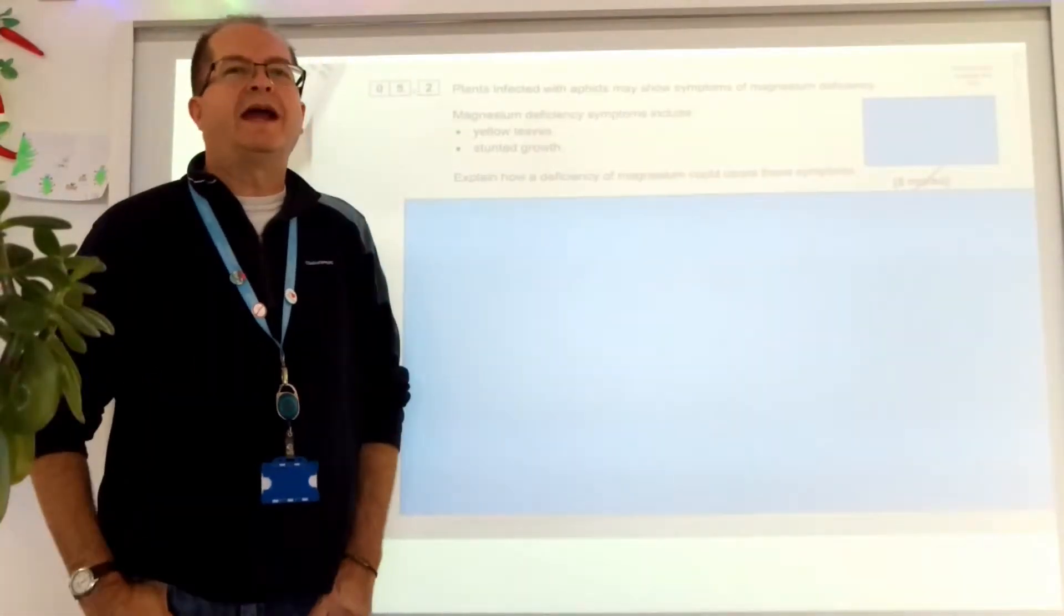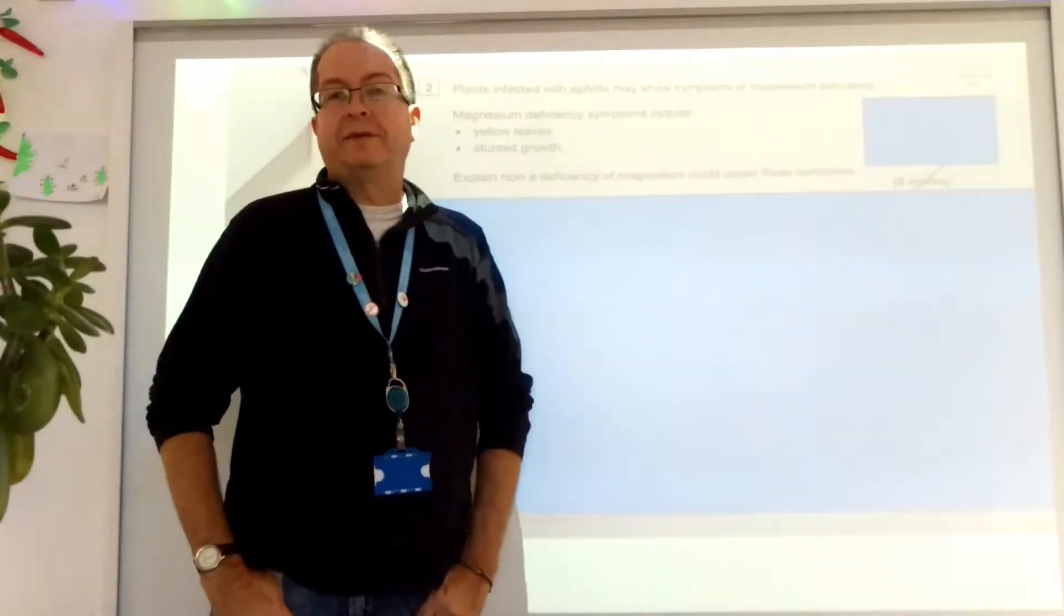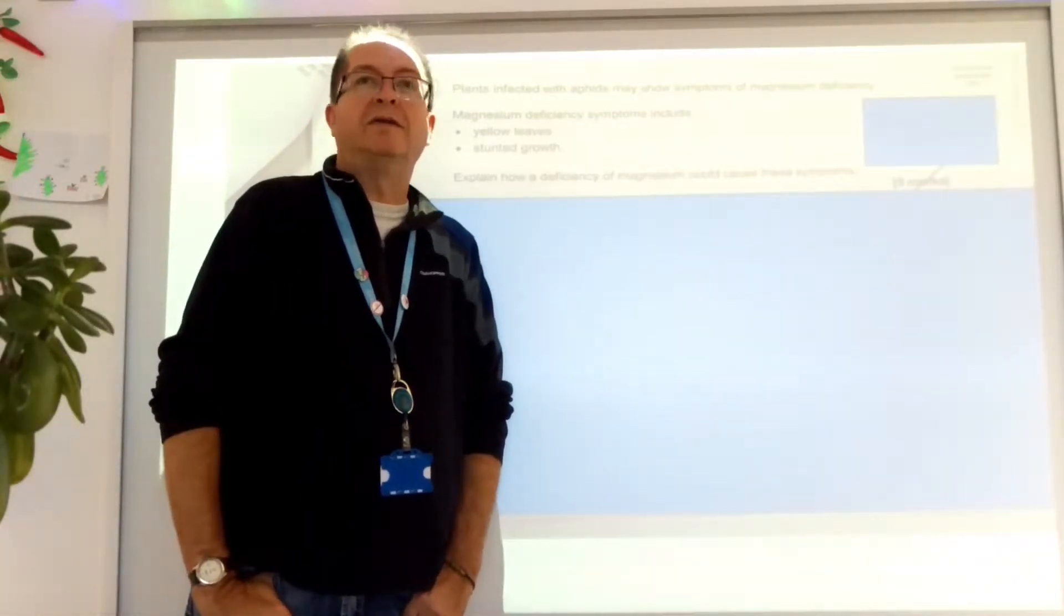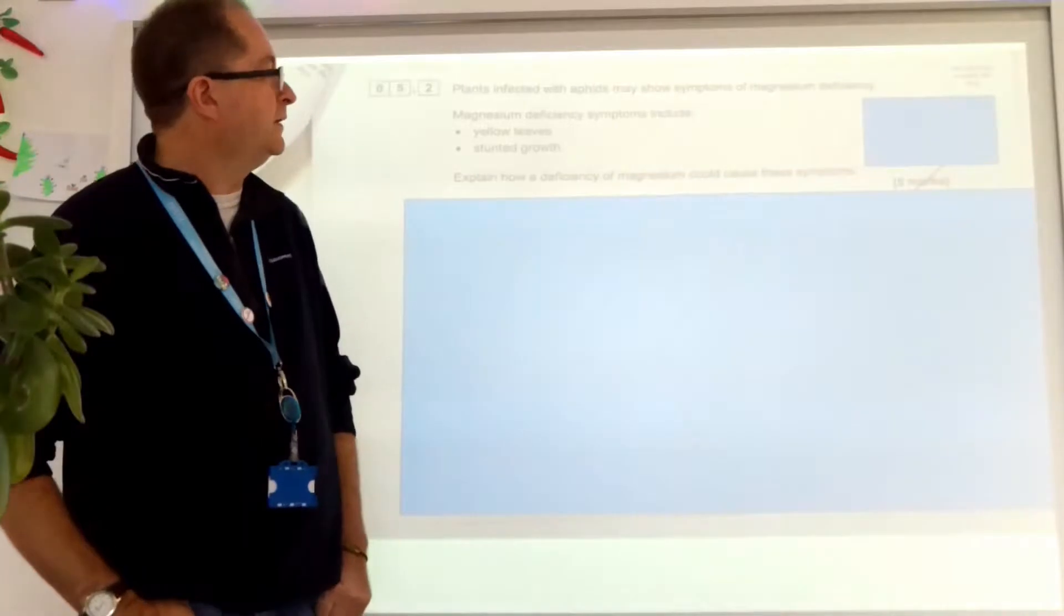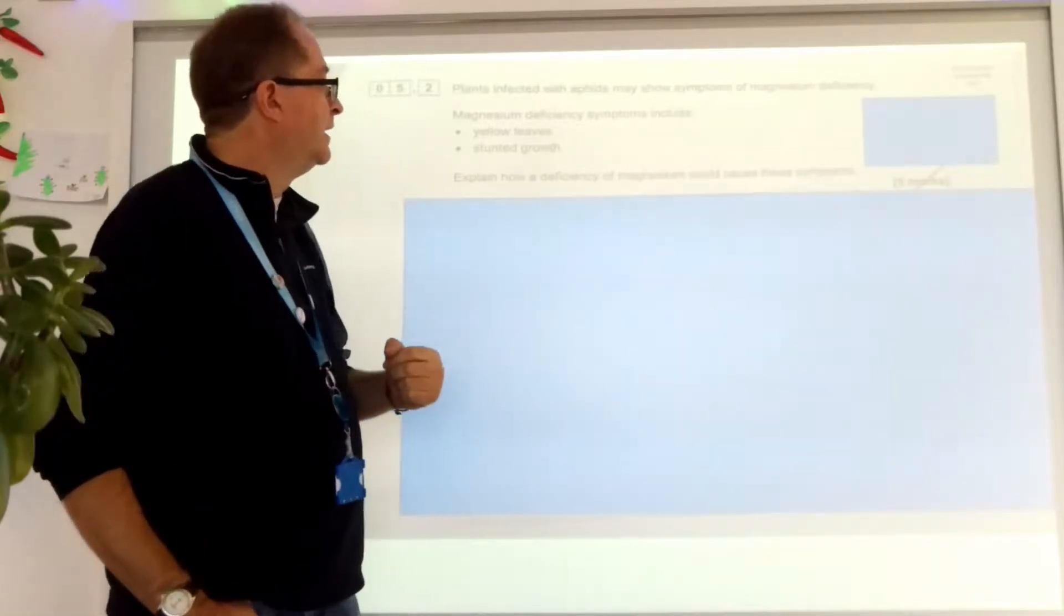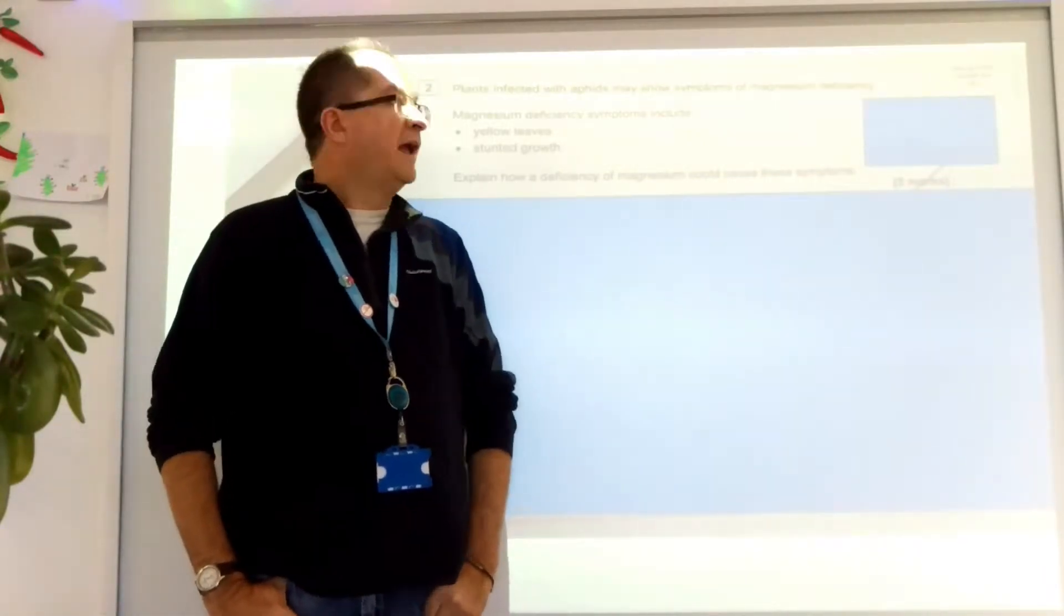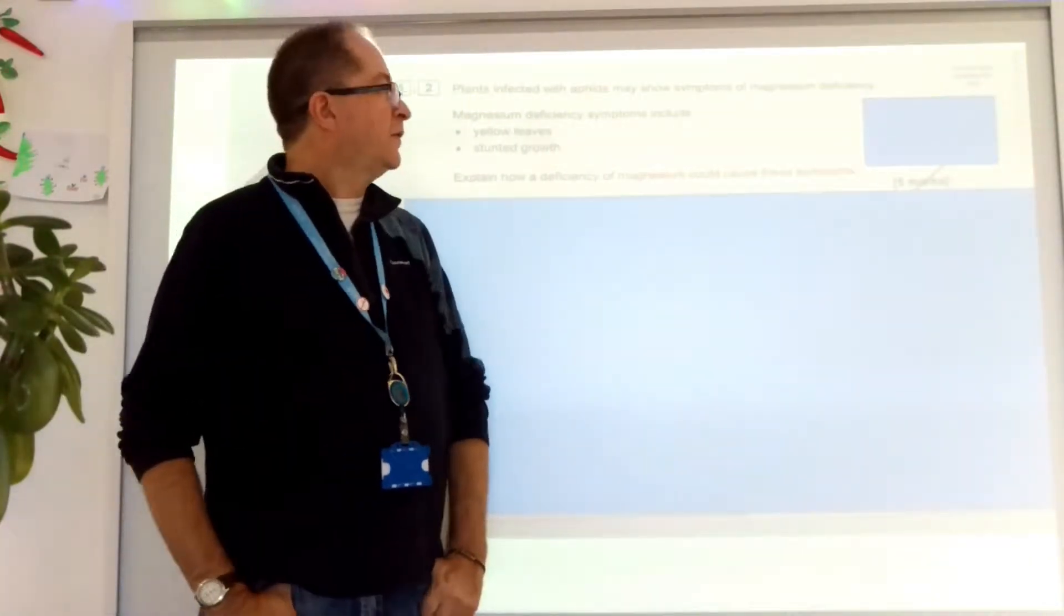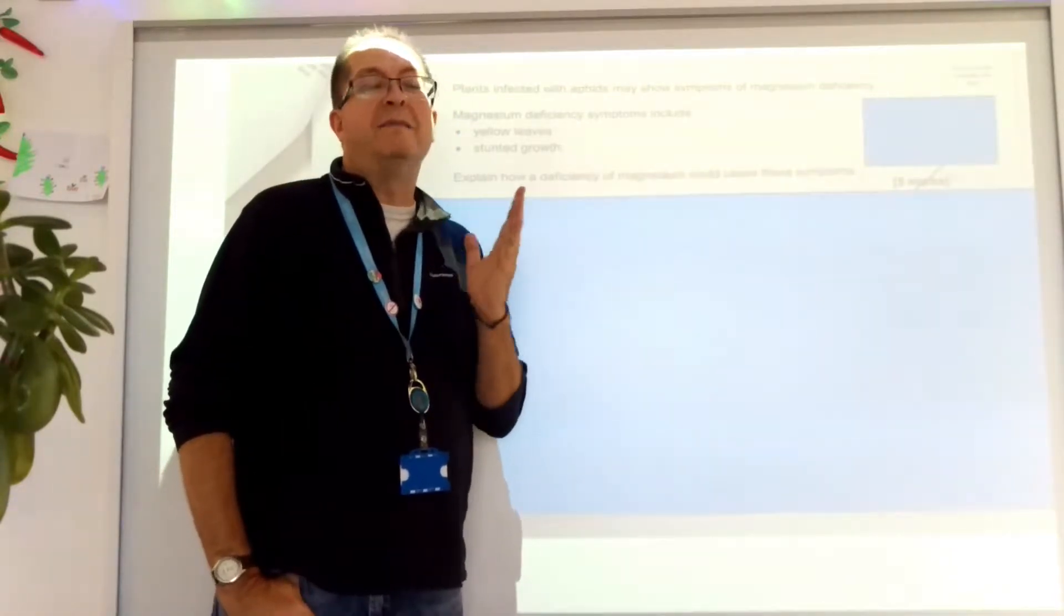So before we see how different students tackle that question, let's have a look at the question itself. Plants infected with aphids may show signs of magnesium deficiency. You've heard of magnesium, yeah, group 2 metal, interesting. Magnesium deficiency symptoms include yellow leaves, stunted growth, yellow and stunted. Explain how a deficiency in magnesium could cause these symptoms. How many marks do I have to get? I have to get 5 marks. So I have to know quite a lot about magnesium deficiency. Or do I? Can I talk around the subject a bit? And we're going to find out, yes you can.